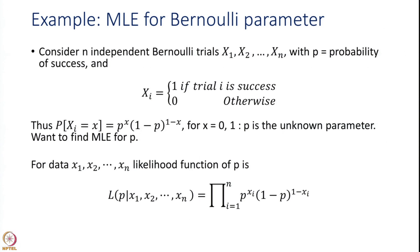Generally, the maximum likelihood estimator of theta is denoted by theta hat. Let us see how we actually do it. I am going to consider three examples in this session. The first example is that of a Bernoulli parameter. Consider n independent Bernoulli trials x1, x2, ..., xn with p as a probability of success, and p is unknown.